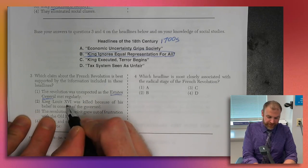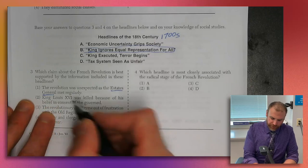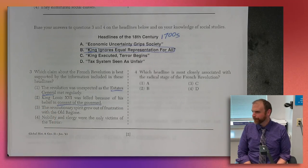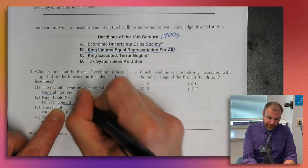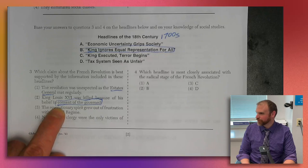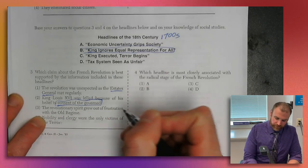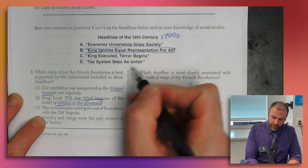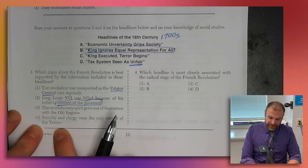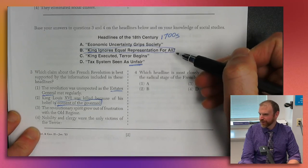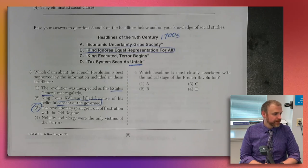Choice two says King Louis XVI was killed because of his belief in consent of the governed — absolutely not, it was the opposite. Choice four — nobility and clergy were the only victims of terror — can't be determined from this source because no particular social class is specified. The best answer is choice three: the revolutionary spirit grew out of frustration with the old regime. When the source says the tax system is unfair, that sounds like frustration.